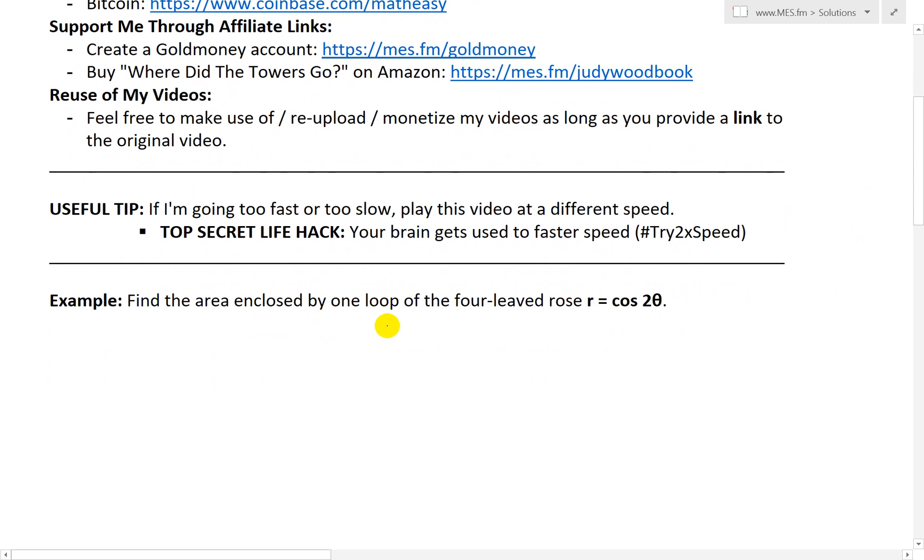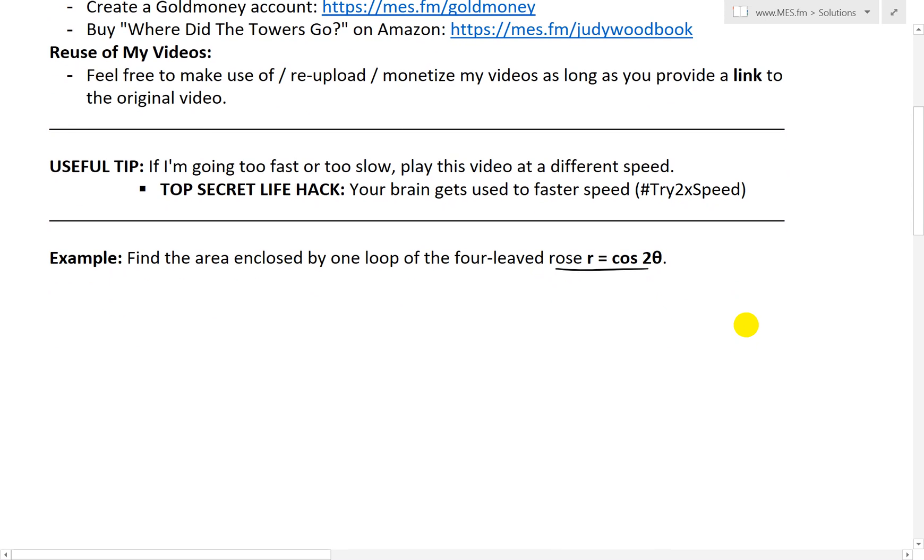Find the area enclosed by one loop of the four-leaved rose r equals 2 cosine 2 theta. In fact, this was from example 8. So basically, first we're going to recall, I'll write from example 8, my earlier video. I'll put that in the video description below. So from example 8,